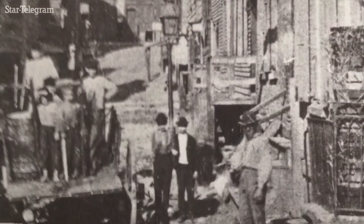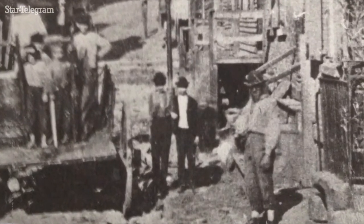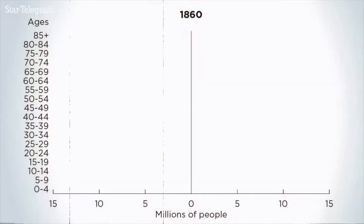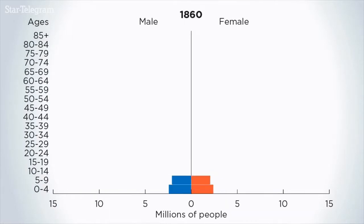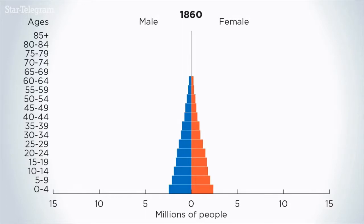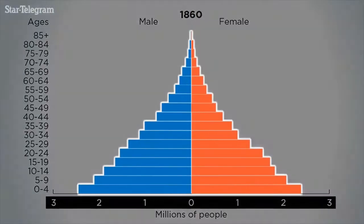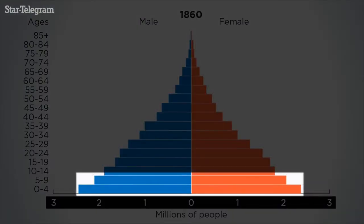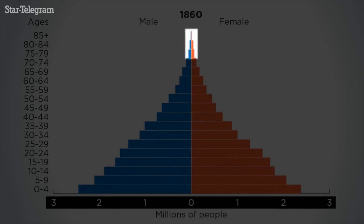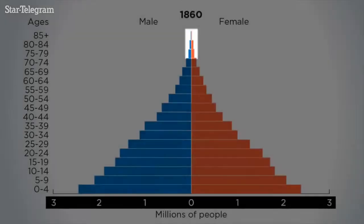Back in 1860, the country was quite young. If we divided it into age groups for men and women and then stacked older groups on top of younger ones, we can visualize the age structure of the population. 1860 had a classic pyramid shape, large at the base where there were lots of children and young people, and narrow on top where fewer people survived into old age.